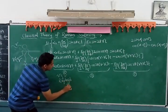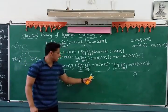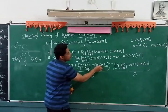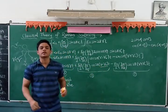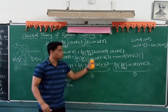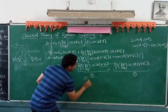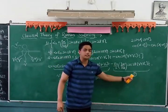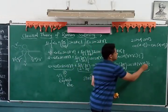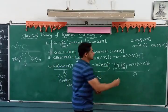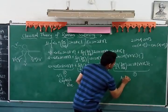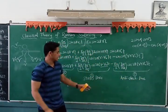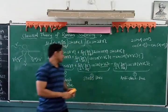From the second term, we can see ν − νᵥ, meaning there is a decrease in frequency. Lines with decreased frequency are called Stokes lines, due to inelastic scattering. From the third term, we have ν + νᵥ — an increase in frequency — and these lines are called anti-Stokes lines, also due to inelastic scattering. The Stokes and anti-Stokes lines together are the Raman lines.